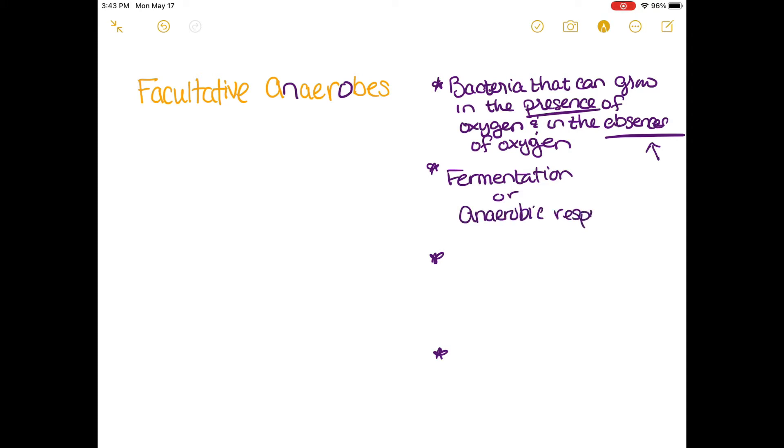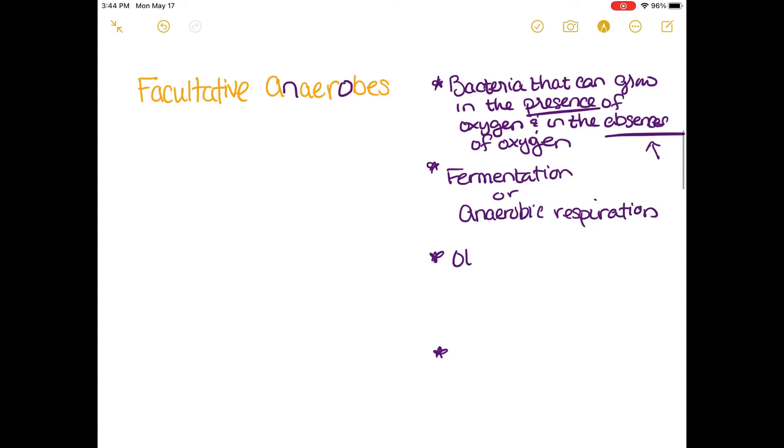In fermentation and anaerobic respiration, we see other electron acceptors. These electron acceptors are nitrate, sulfate, and carbonate. Examples here are E. coli and yeast.